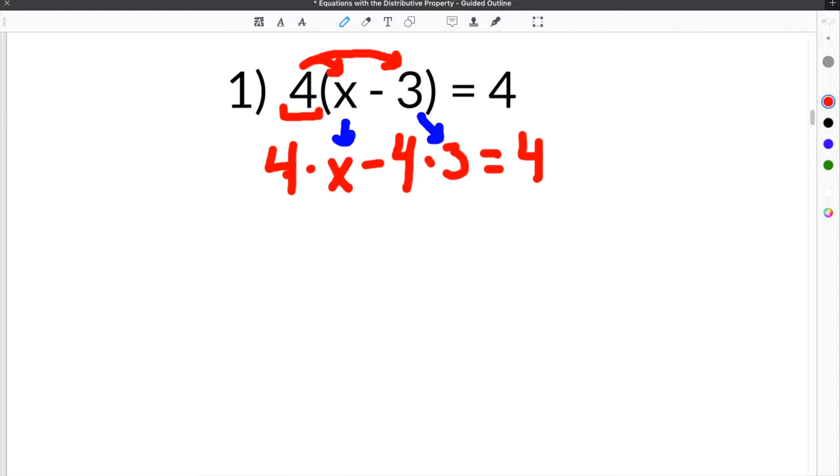Then we're going to do the math. 4 times x is 4x. And then 4 times 3 is 12. We bring down equals 4. You will notice that the minus sign in the middle gets carried through the problem. So when we do 4 times 3, we keep this minus sign right in the middle.